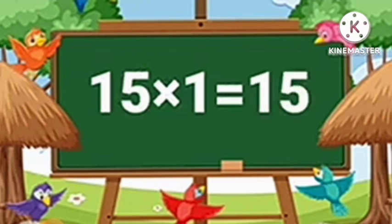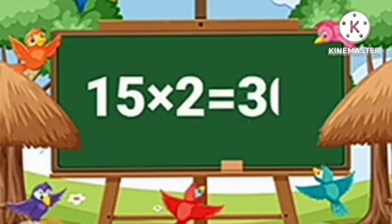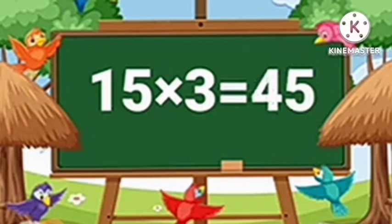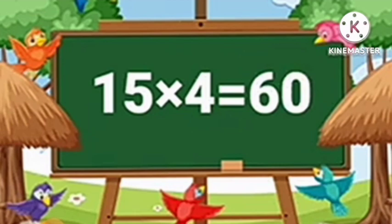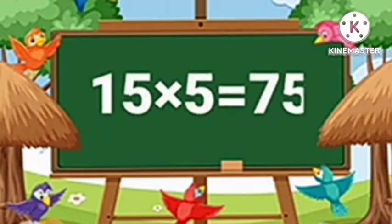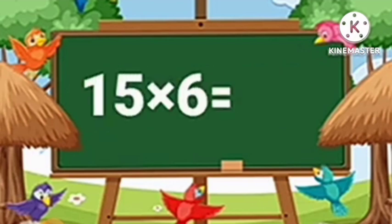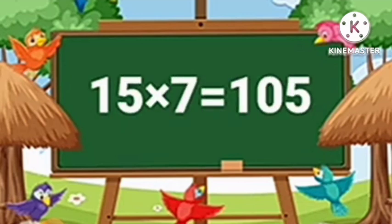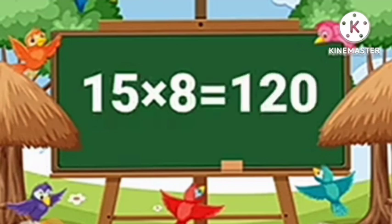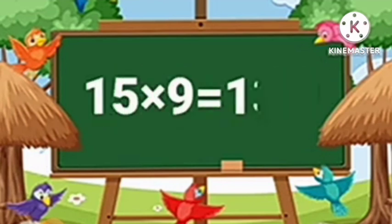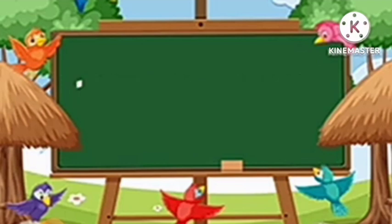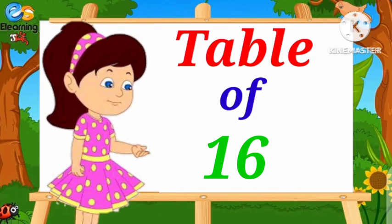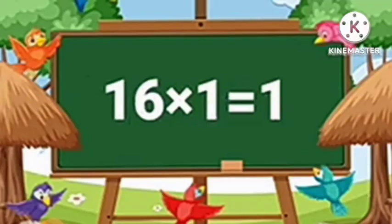Table of Fifteen. Fifteen-One's are Fifteen. Fifteen-Two's are Thirty. Fifteen-Three's are Forty-Five. Fifteen-Four's are Sixty. Fifteen-Five's are Seventy-Five. Fifteen-Six's are Ninety. Fifteen-Seven's are One Hundred and Five. Fifteen-Eight's are One Hundred and Twenty. Fifteen-Nine's are One Hundred and Thirty-Five. Fifteen-Ten's are One Hundred and Fifty.